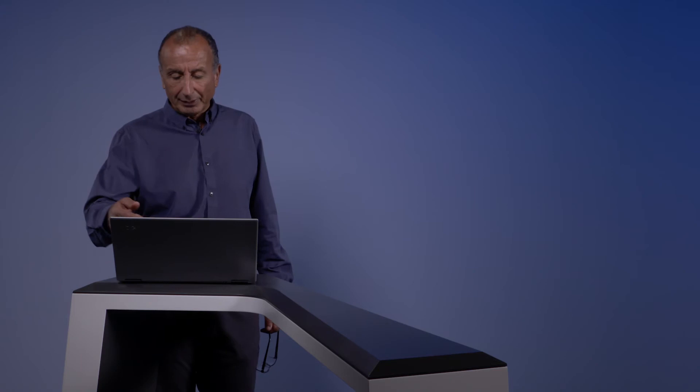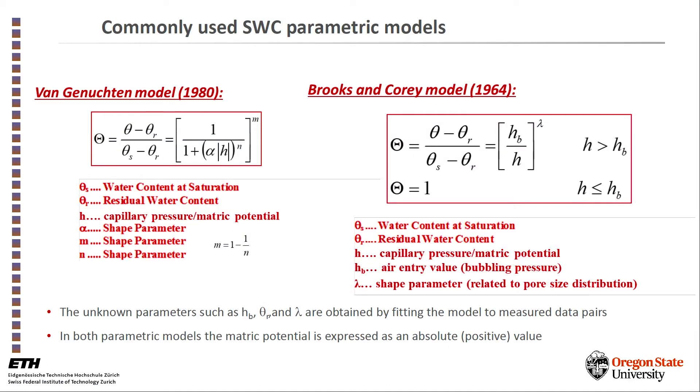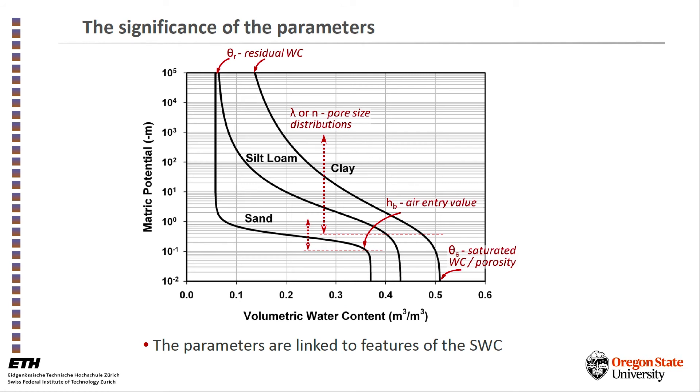In the following video I'll show you how to fit these parameters, but the basic idea is that we use a few measurements to estimate these parameters. For example, in the Brooks and Corey model it would be the bubbling pressure, the residual water content and the lambda parameter, the shape parameter that is related to the pore size distribution. Typically we have some idea about the saturated water content.